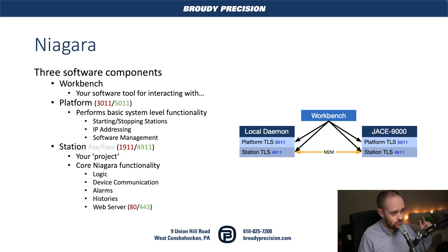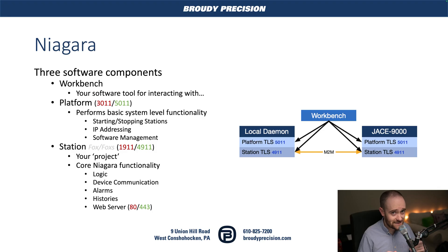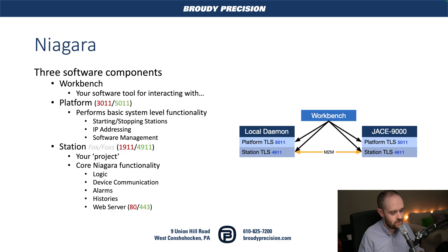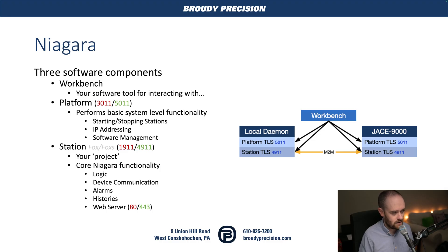The other two pieces of the Niagara picture are our platform and our station. The platform is sort of the 'Windows' of a Niagara environment — it handles basic system-level functionality like allowing you to start and stop stations, IP addressing, software management, and file system management. That's done directly on the platform across all platforms, so whether you're running Niagara on your local computer, a virtual machine in the cloud, or on a Jace, they all have a platform that looks and feels the same exact way, with only slight differences in what you can manage.